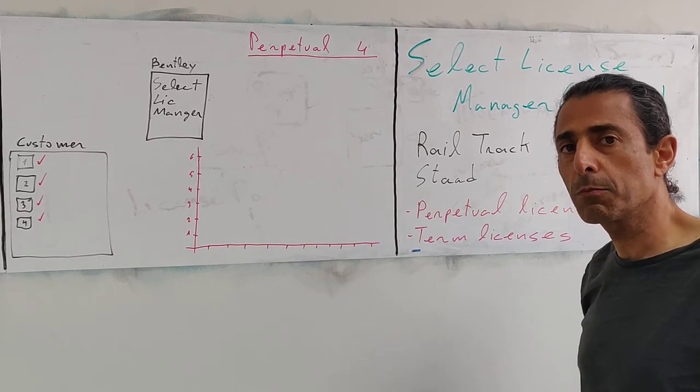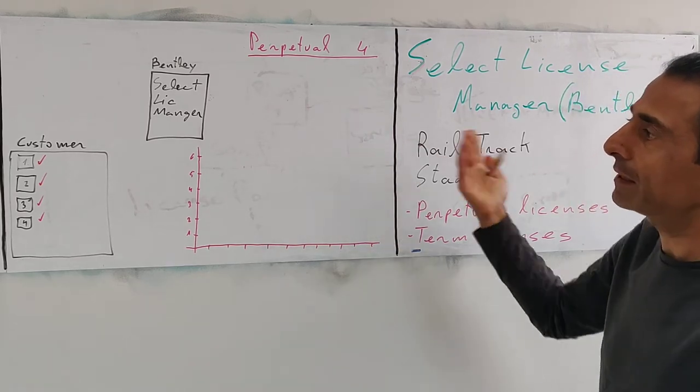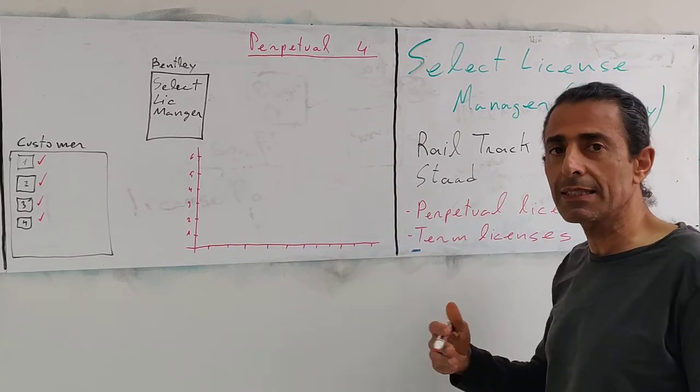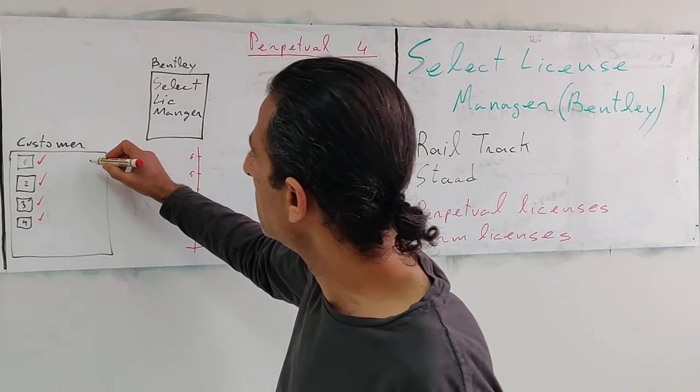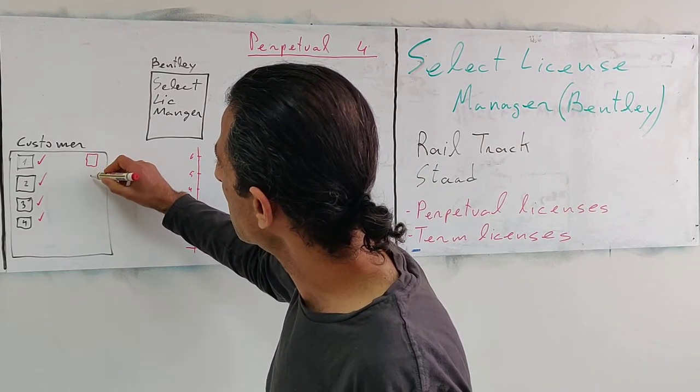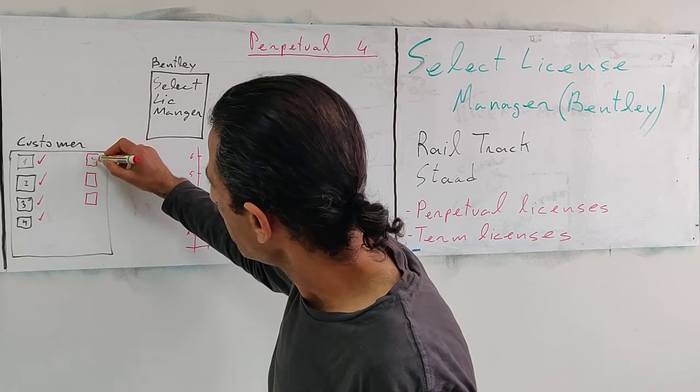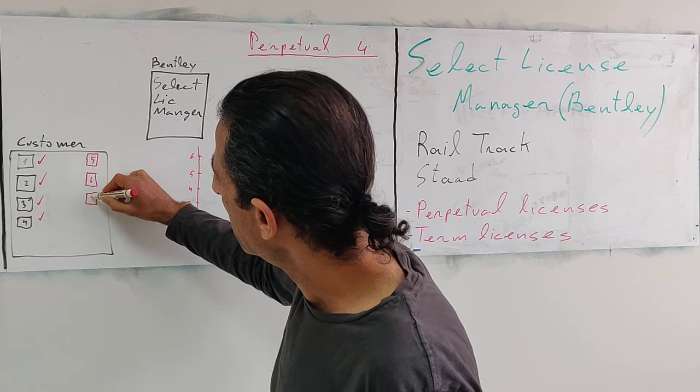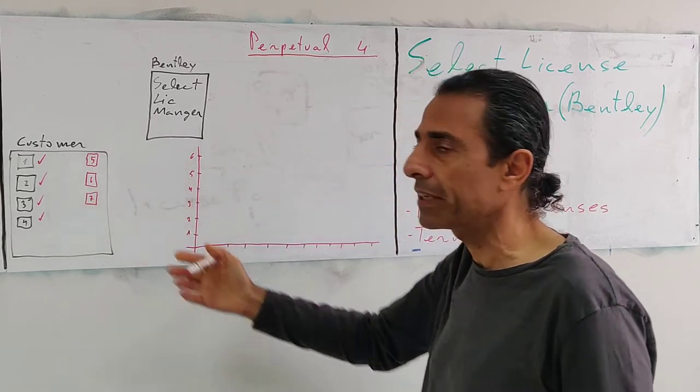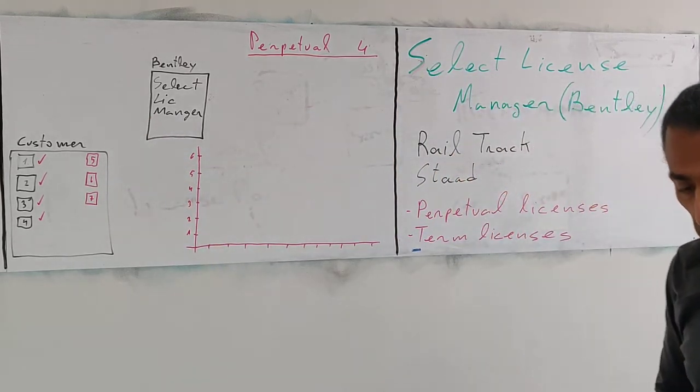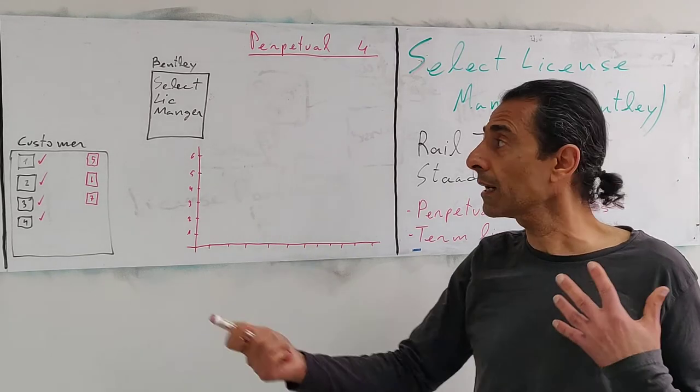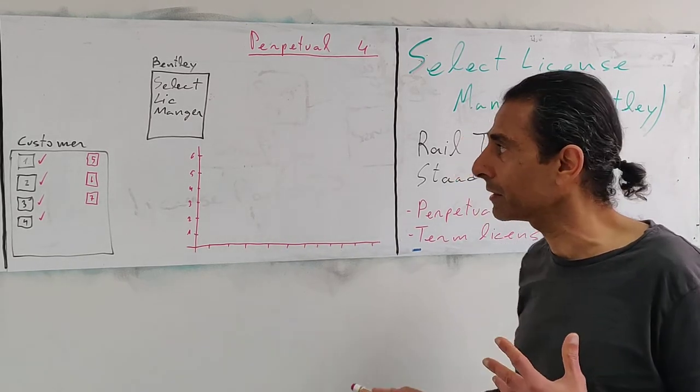Now since we have four perpetual licenses, as our four usual employees access the licenses they are fulfilled from the perpetual license pool, and that's great. But let's take a situation where we have additional users, maybe due to more projects that came in, and we have three additional users that are using the licenses from time to time during the month.